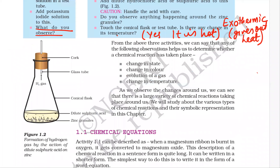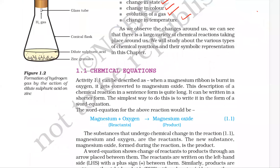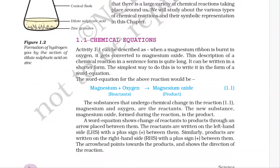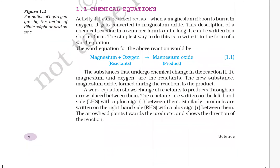From the above three activities we can say that the following observations help us to determine whether a chemical reaction has taken place. A chemical reaction is always accompanied by one or more of these conditions. In a chemical equation, the word equation shows the change of reactants to products, like magnesium plus oxygen gives magnesium oxide. Magnesium and oxygen are reactants and the thing formed after the reaction is the product.